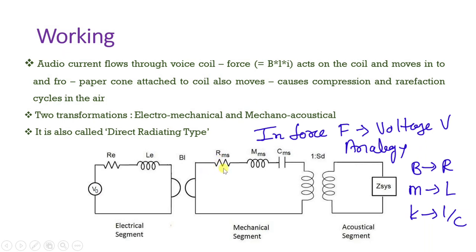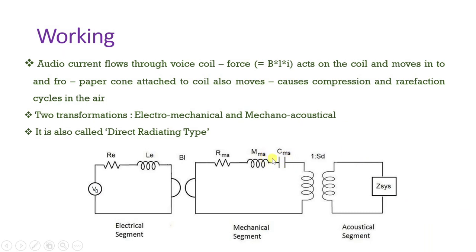In the mechanical domain we have damping constant, mass, and spring constant k. In the force-voltage analogy, damping constant is equivalent to resistance, mass is equivalent to inductance, and spring constant is equivalent to capacitance. The second transformation is mechano-acoustical transformation: the mechanical motion must be translated into sound, which occurs only when the impedance of air is matched with the mechanical motion. This transformation of the mechanical segment's motion into an acoustical signal is the mechano-acoustical transformation, and this complete process happens in the moving coil loudspeaker.